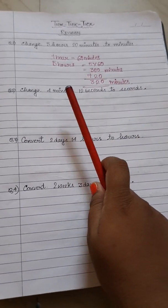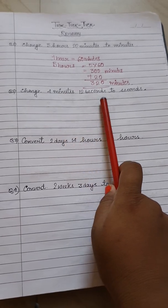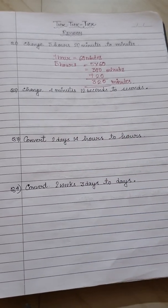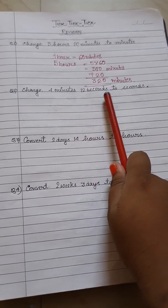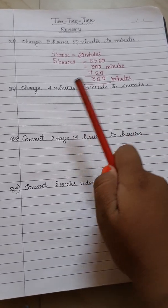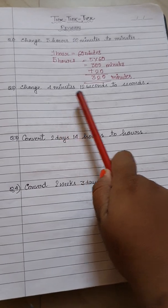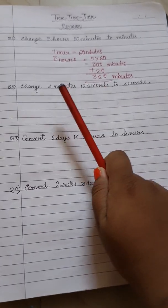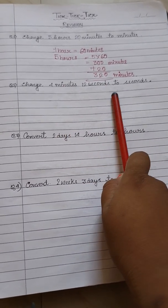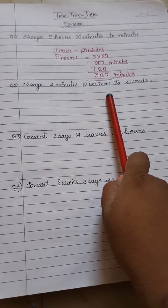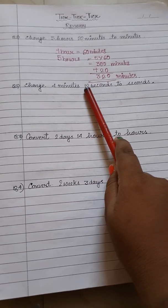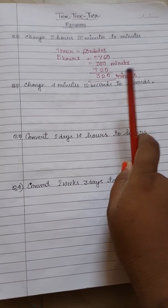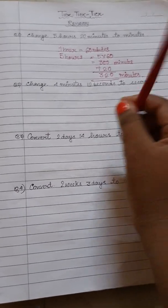Right? In this way, the second one: change 4 minutes 12 seconds to seconds. As we know, 1 minute equals 60 seconds. So find how many seconds 4 minutes will be, then add 12 seconds to get the final answer.